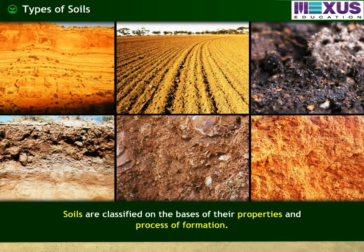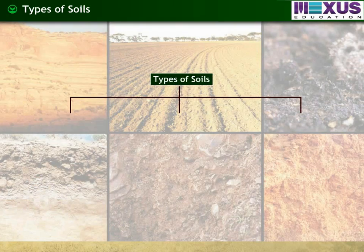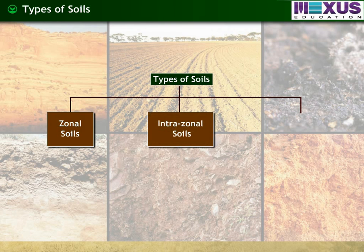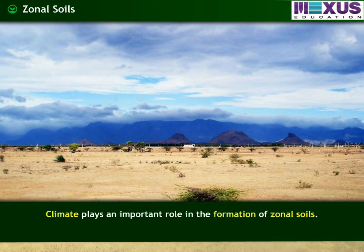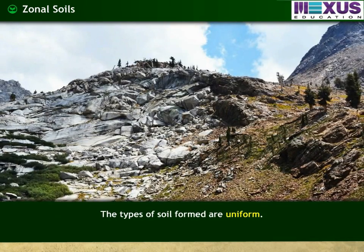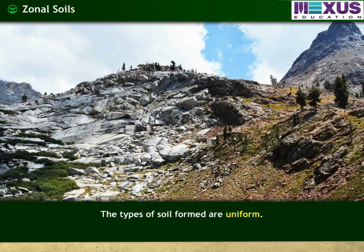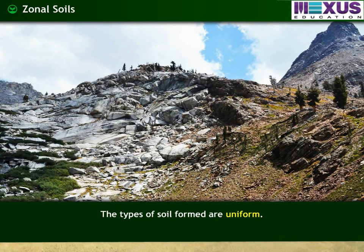Soils are classified on the basis of their properties and process of formation. They are zonal soils, intrazonal soils, and azonal soils. Climate plays an important role in the formation of zonal soils. Although there is a variation in the types of rocks found in a region, the types of soil formed are uniform. The regions of zonal soil are parallel to the latitude.